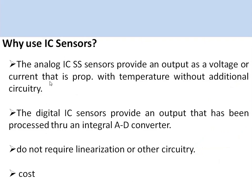IC sensors have several advantages. They provide output as a voltage or current proportional to temperature without any additional circuitry. Unlike thermocouples, RTDs, or thermistors which require a Wheatstone bridge or compensation circuitry, IC sensors have all necessary circuitry built in by the manufacturer. Both analog and digital versions are available; digital sensors provide temperature as digital bits, avoiding the need for external ADCs, and no linearization circuitry is required.